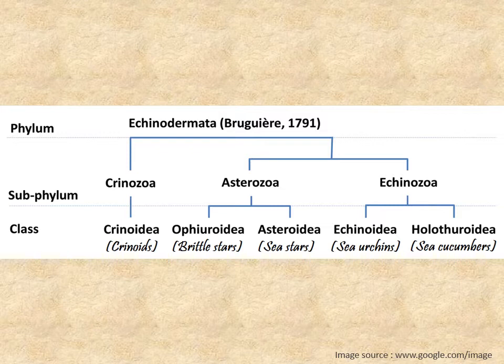Now, looking at the classification of the phylum Echinodermata, according to the most usable classification proposed in 1791, the phylum is divided into three subphyla: Crinozoa, Asterozoa, and Echinozoa. These three subphyla are again divided into five classes: Crinoidea, Ophiuroidea, Asteroidea, Echinoidea, and Holothuroidea. Their common names are crinoids, brittle stars, sea stars, sea urchins, and sea cucumbers respectively.